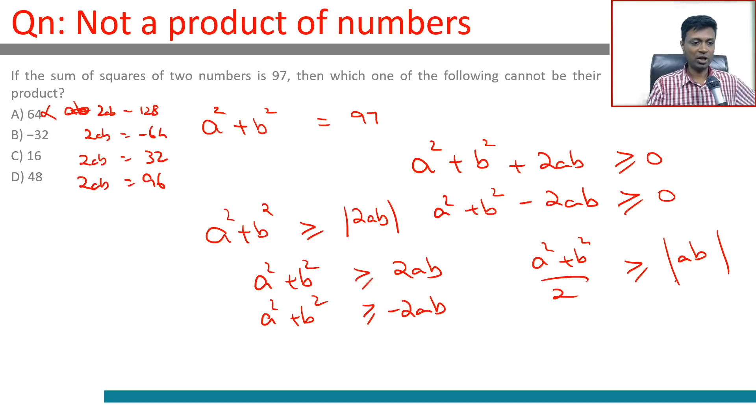So here it is, summing up to 97, so 2ab has to lie between 97 and -97, or ab should be less than 97/2, greater than -97/2. All of these work, this one doesn't.